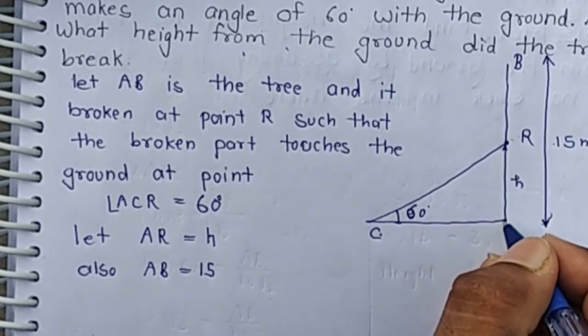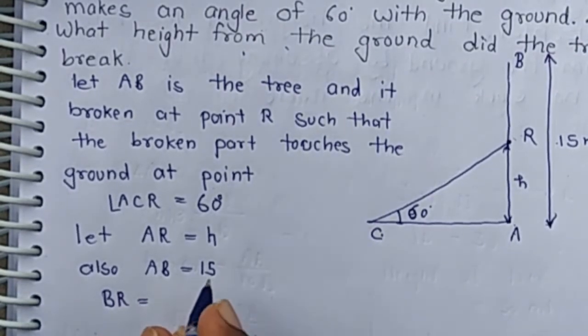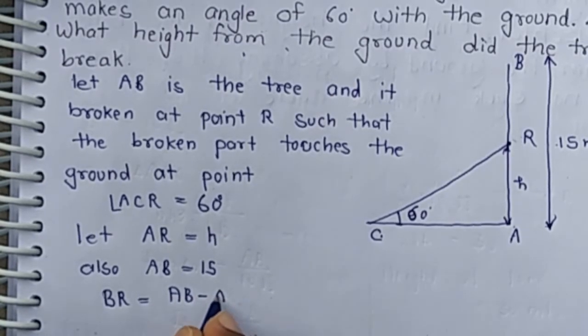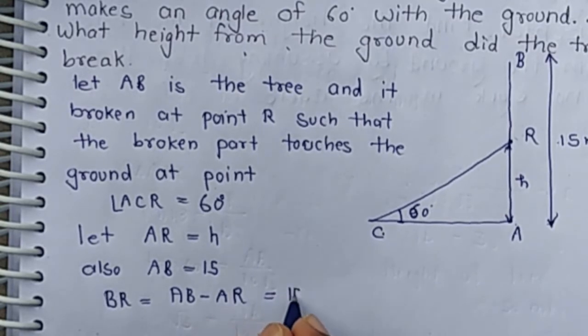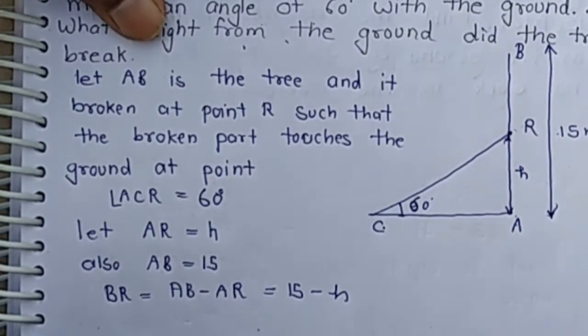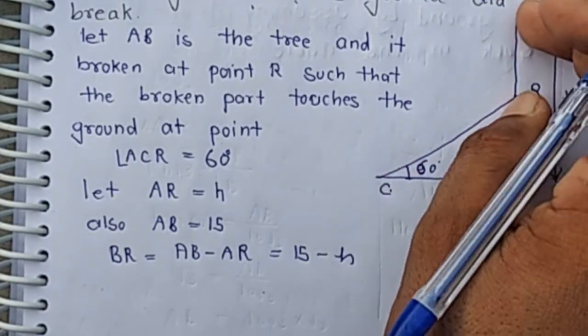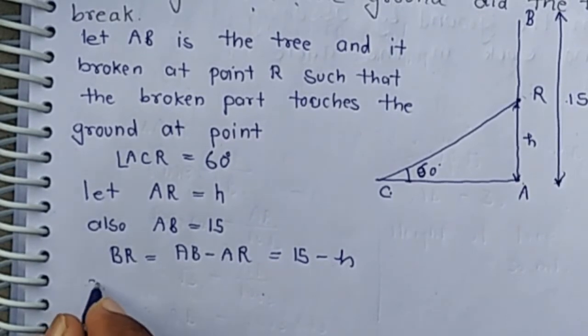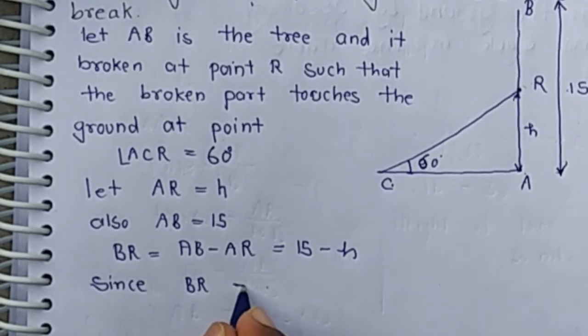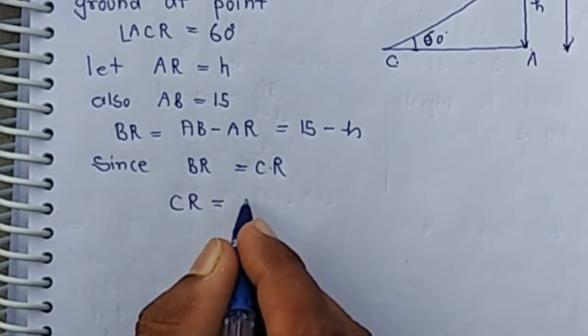BR equal AB minus AR means 15 minus H. And since BR is the portion which touches the ground, BR equal CR. Then CR equal 15 minus H.